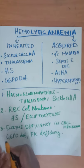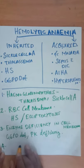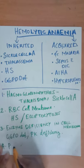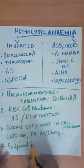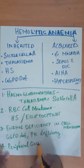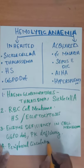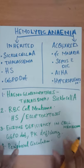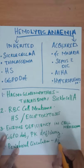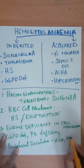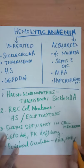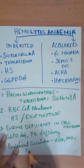The fourth cause is due to a problem in the peripheral circulation of RBC. Examples include DIC, autoimmune hemolytic anemia, paroxysmal nocturnal hemoglobinuria, and prosthetic valve.